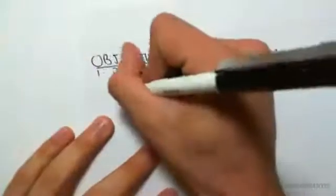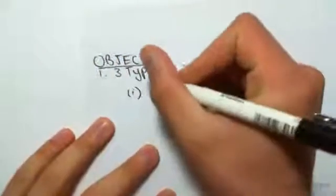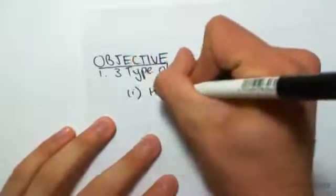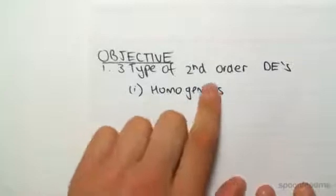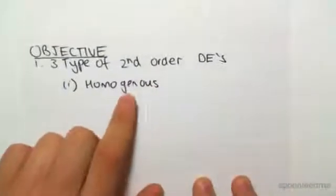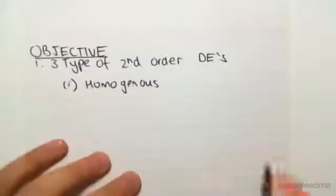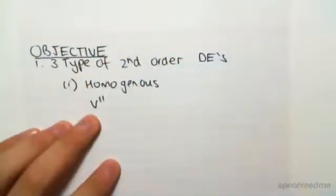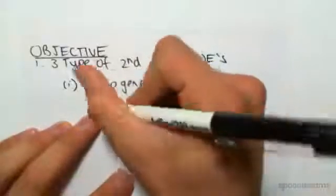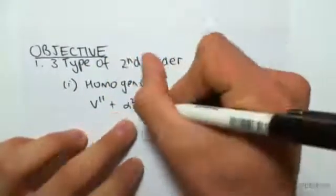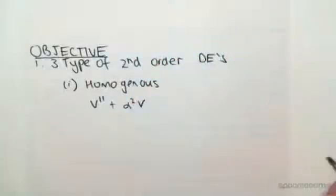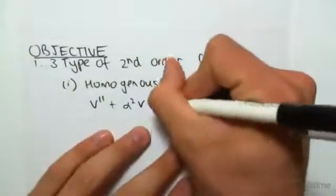Anyway, so the first one we're going to be dealing with is what we call a homogeneous second-order differential equation. So it's quite a long name, but that's what it's called. Now, it's going to look something like this. You're going to have v double dash, and that's where the second-order comes from because it's the second derivative, plus a constant, which will be alpha squared, so alpha squared is just a constant, and v, which is just the original function, equals zero.